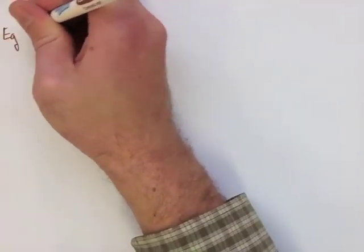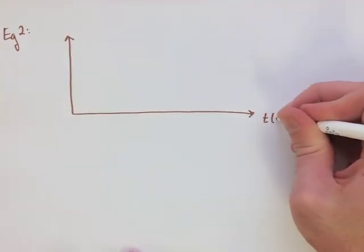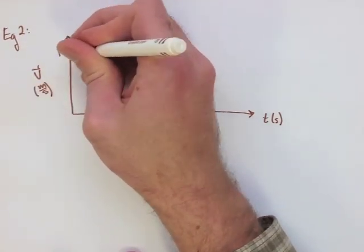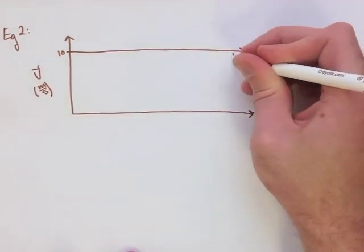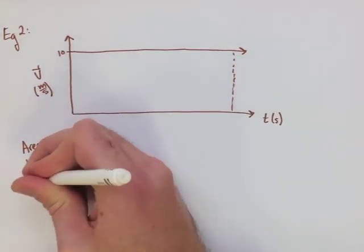Now, the second graph we're going to look at is the velocity-time graph. We're going to look at it in the exact same way. We're going to have a constant velocity. We're going to create a little box so that we can easily find the area, and then we're going to calculate what the area under that line actually means.